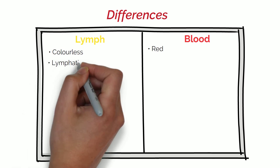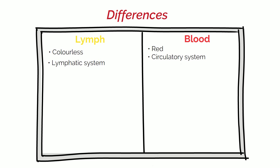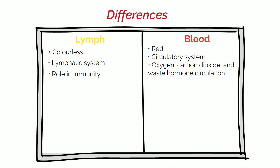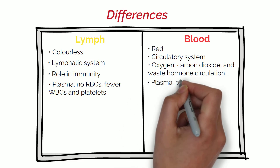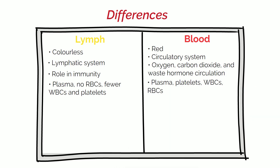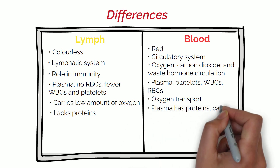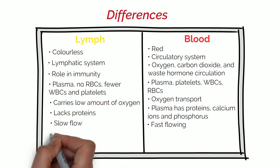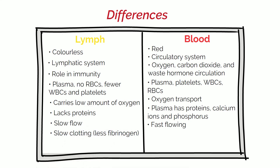The main differences are that blood is red and lymph is colourless. Lymph resides in the lymphatic system and blood in the circulatory system. Blood is involved in the transport of oxygen, carbon dioxide and waste hormone circulation, whereas lymph plays a role in immunity. Lymph contains plasma but no red blood cells and fewer white blood cells and platelets, whereas blood contains plasma, platelets, white blood cells and red blood cells. Lymph carries relatively low oxygen compared to blood, lacks proteins, whereas plasma has proteins, calcium ions and phosphorus. Lymph fluid flows slowly compared to blood, clots slower due to less fibrinogen, and lymph only moves in one direction while blood moves in a circular motion.